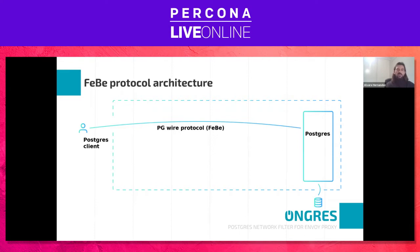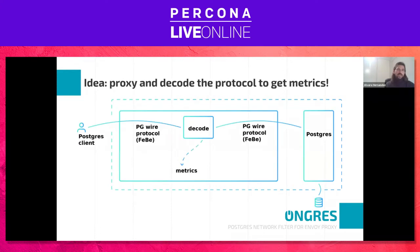What if we would intercept this protocol, set up a middle box — a middleware layer — where we intercept this protocol and proxy it? In this case, we'd have an intermediate layer between the Postgres client and the Postgres server where the protocol is intercepted and forwarded exactly as it came. Basically, a proxy.